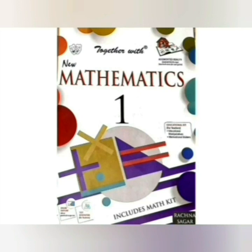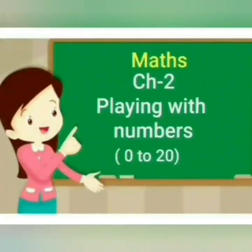In this lecture, you will learn about the chapter playing with numbers 0 to 20. This is the second chapter of the maths book of class 1. So, let us first understand the meaning of playing with numbers. Playing with numbers means using numbers in a way that we can arrange them, name them, compare them, etc.